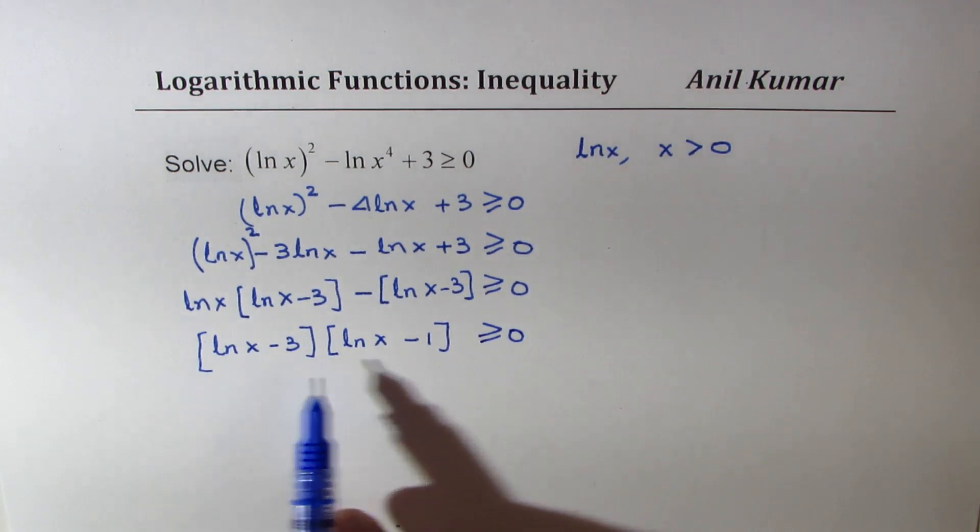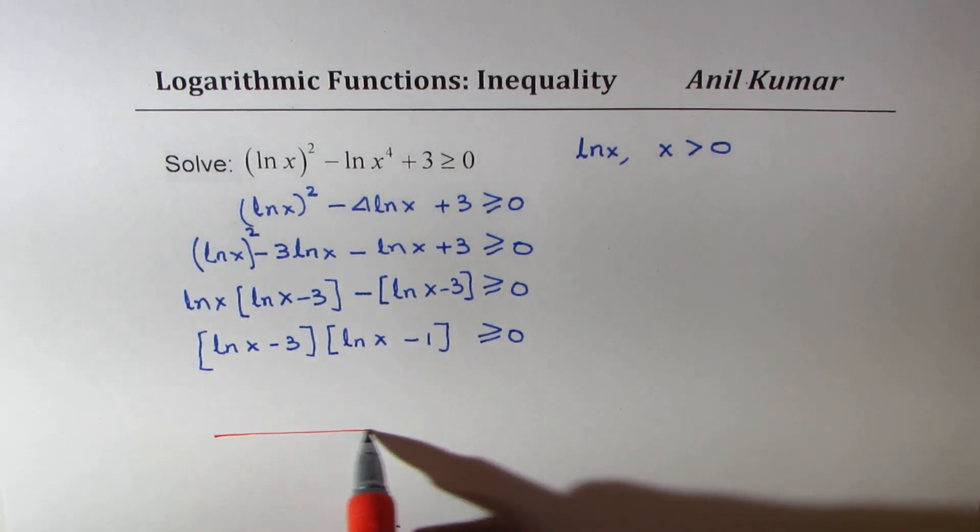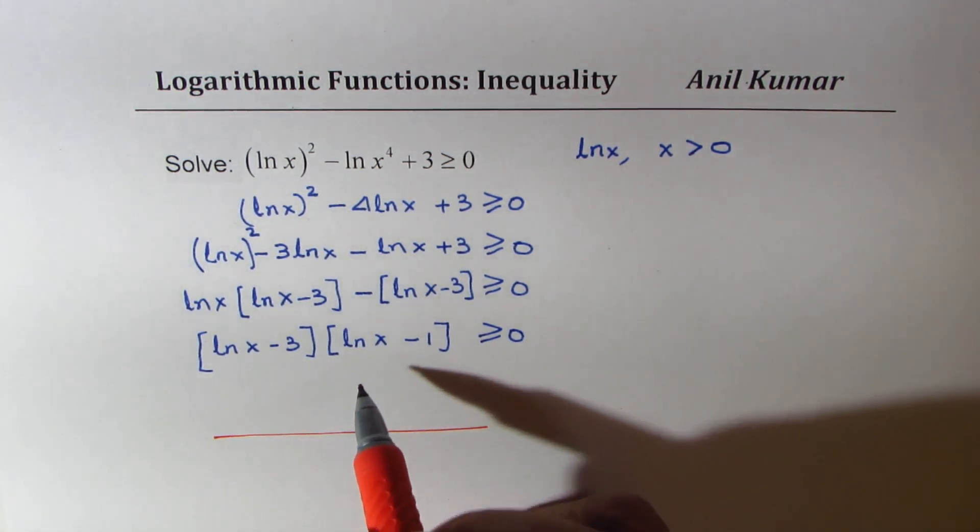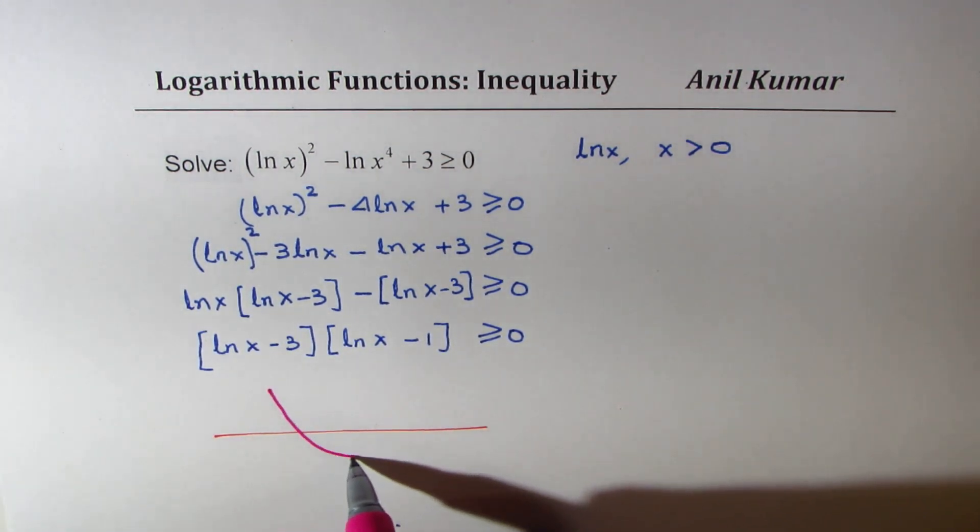So that basically gives us the solution. We could treat this as kind of a parabola. We could make a table of values, but the easier way here is to think about the parabola as such, so it should look something like this.